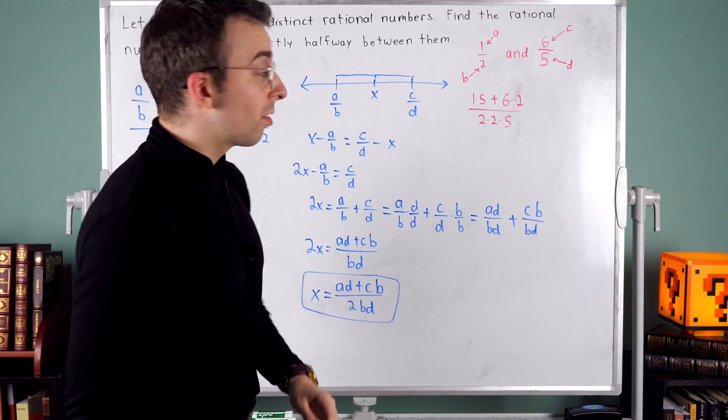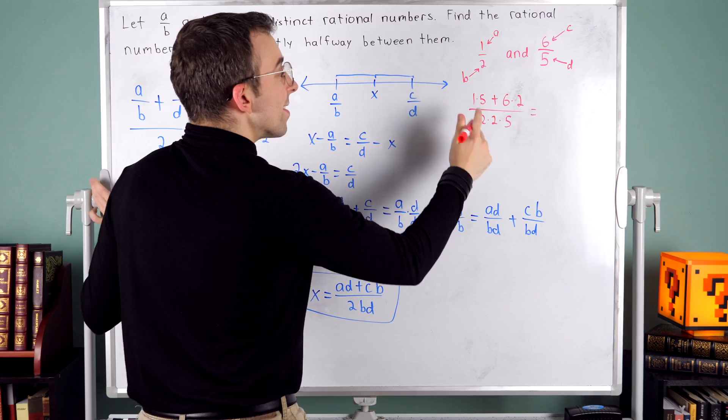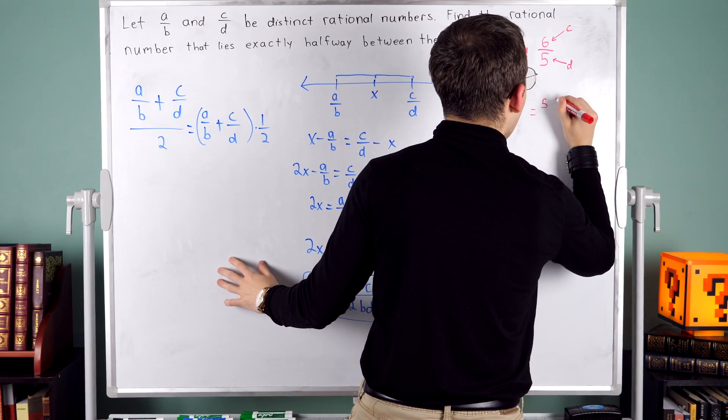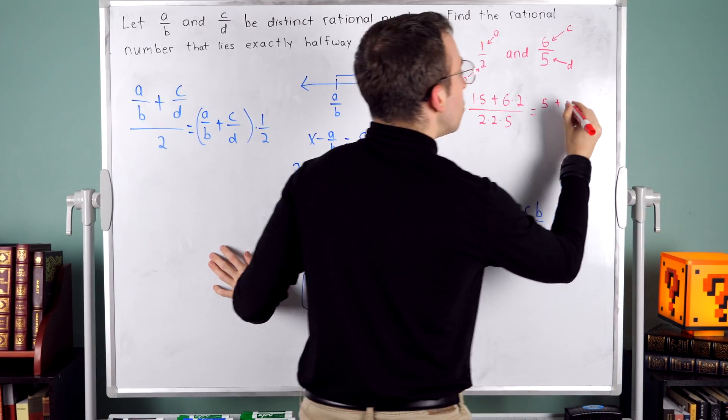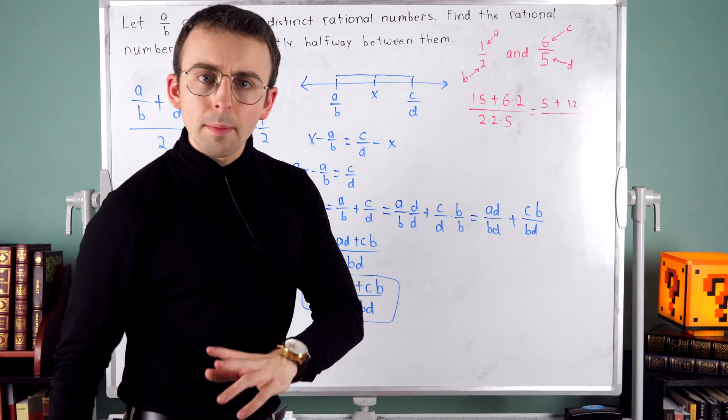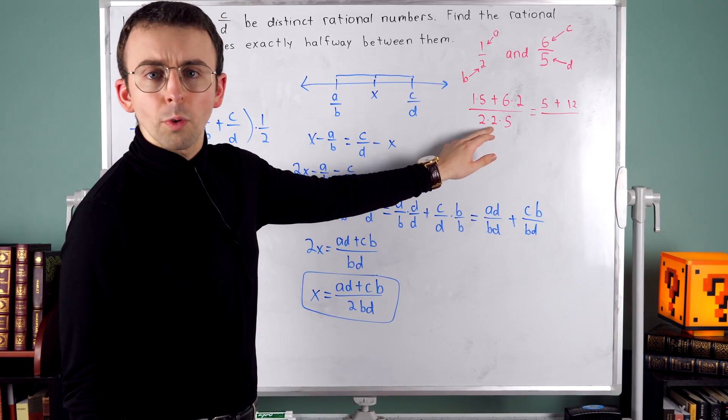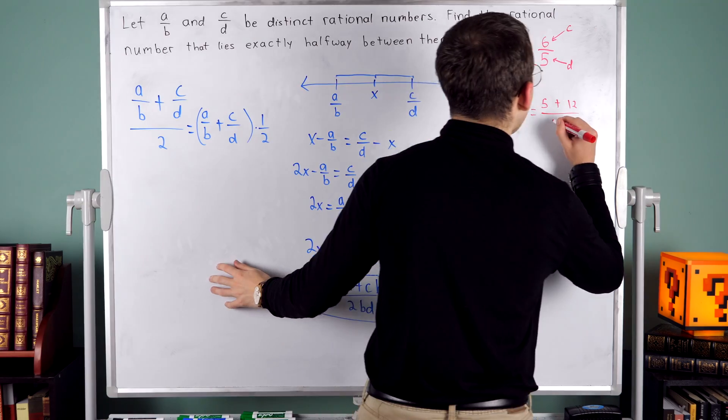All right. Now I've just got some basic arithmetic to do. One times five is five. Six times two is 12. And then in the denominator, two times two is four times five is 20.